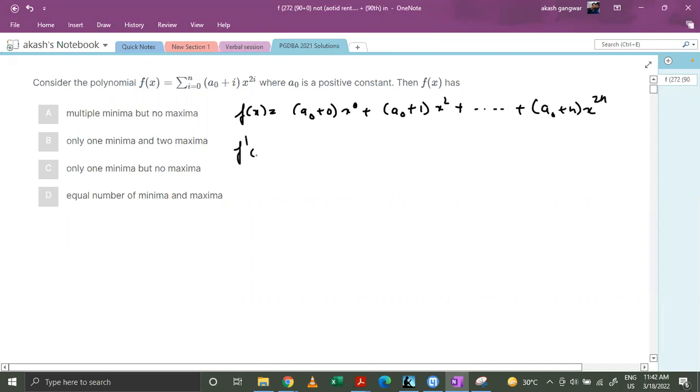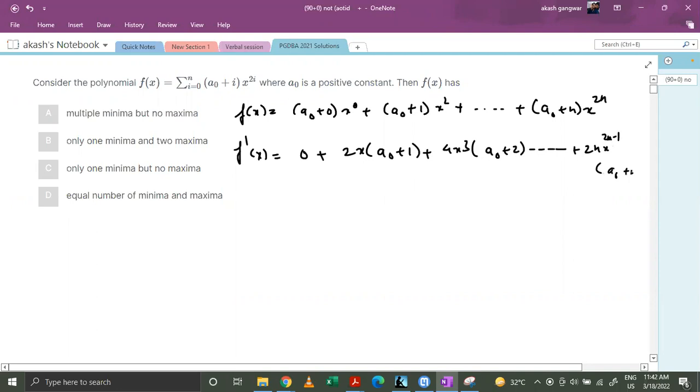Now f'(x) equals: this is 0 plus 2x·a₀ plus 1 plus 4x³·a₀ plus 2 till 2n·x raised to power 2n minus 1 times a₀ plus n.